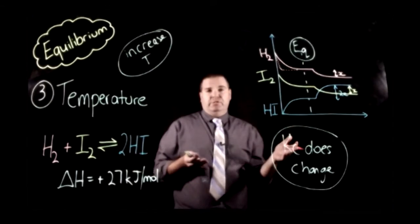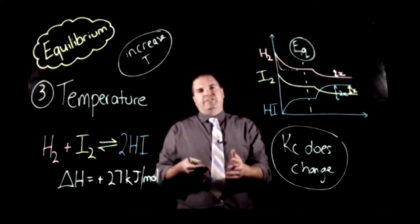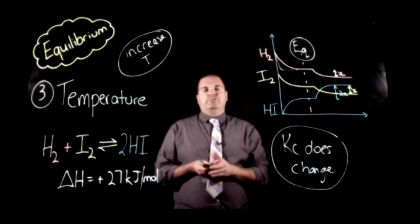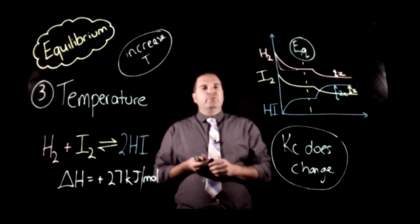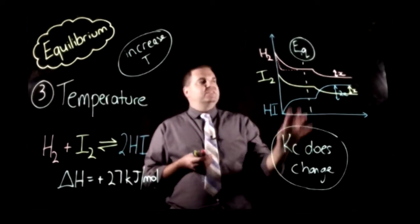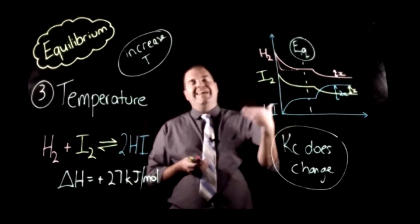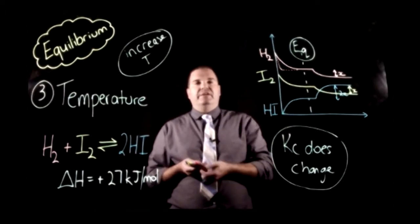Alright, that's all the catalyst does: provides an alternative reaction pathway, lower activation energy, and helps align particles in the correct orientation. So in terms of equilibrium, it doesn't affect the Kc value, it doesn't affect equilibrium concentrations, it just lets you get to equilibrium faster.